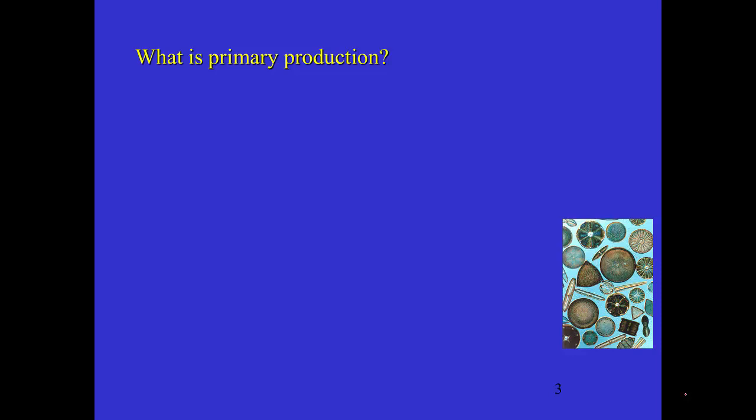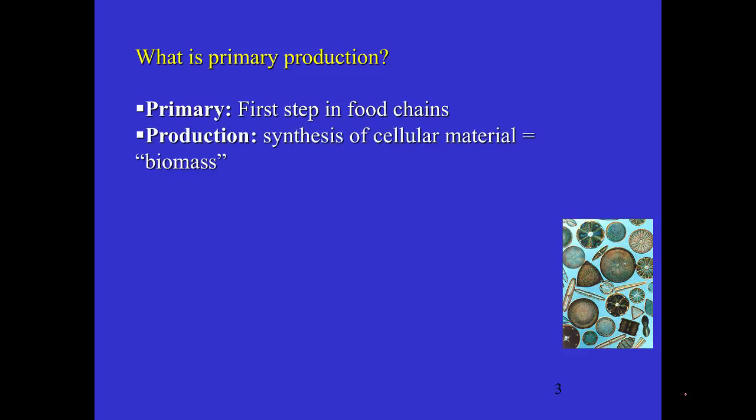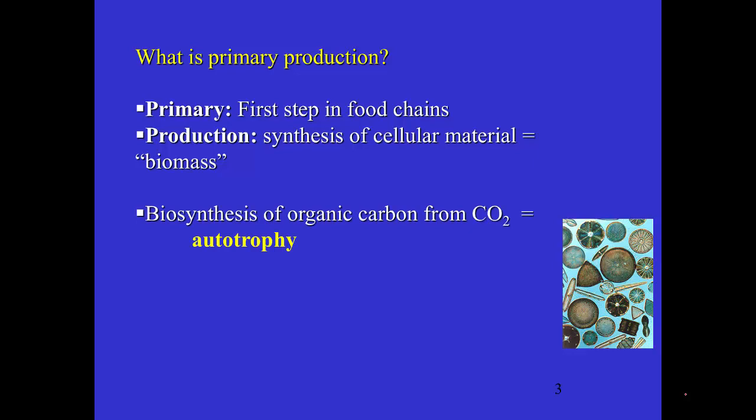Let's start with the real basics. What is primary production? You probably know this already—it's the first step in the food chain, hence the name primary. Production means the synthesis of biomass, cellular material, the proteins, polysaccharides, and so on that make up these organisms. This synthesis is based on carbon dioxide. All that organic material in the whole biosphere comes from primary producers that make organic material by this fixation of CO2.